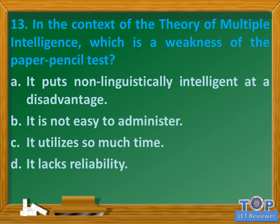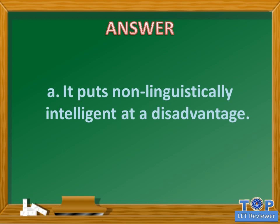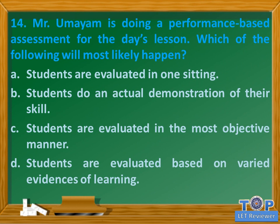Question number thirteen: In the context of the theory of multiple intelligences, which is a weakness of the paper-pencil test? A. It puts non-linguistically intelligent students at a disadvantage, B. It is not easy to administer, C. It utilizes so much time, D. It lacks reliability. Answer: A. It puts non-linguistically intelligent students at a disadvantage.